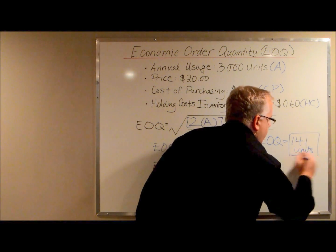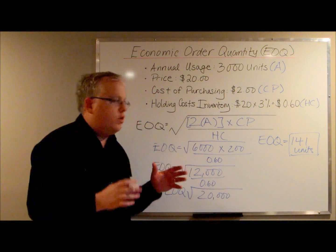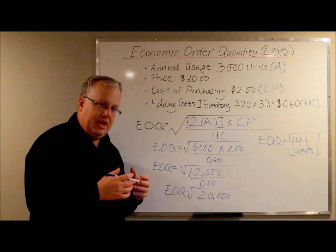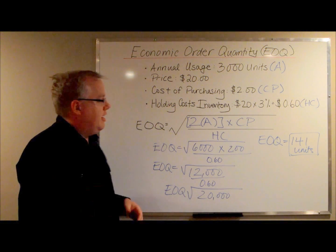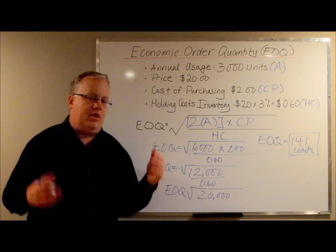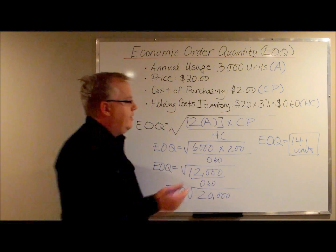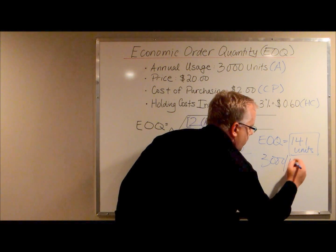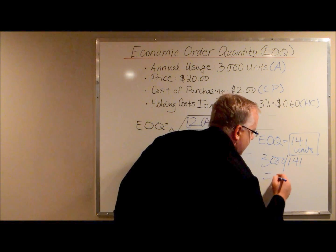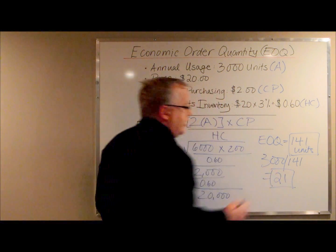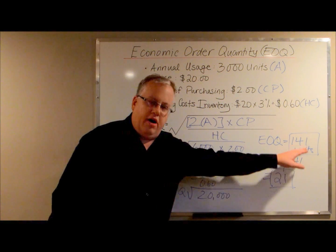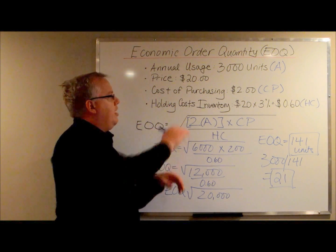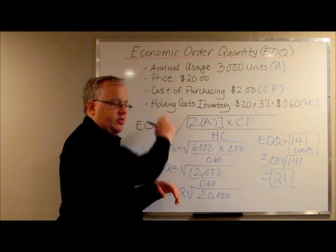141 units — that is the ideal quantity where your costs to purchase and your costs of holding inventory are minimized. If you want to determine how many orders you'll place throughout the year, take 3,000 divided by 141, and you get 21 orders. So throughout the year you'll place 21 orders, buying 141 units at a time, minimizing your cost of purchase and your holding costs of inventory.